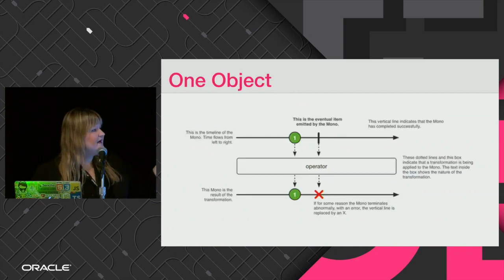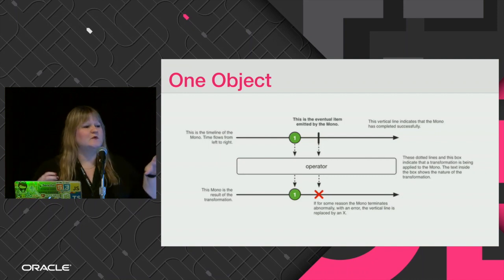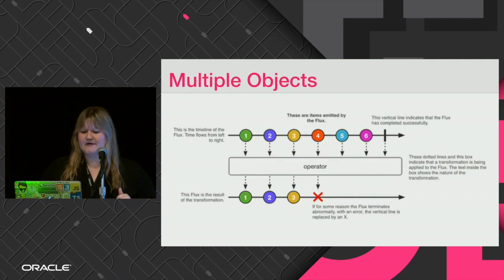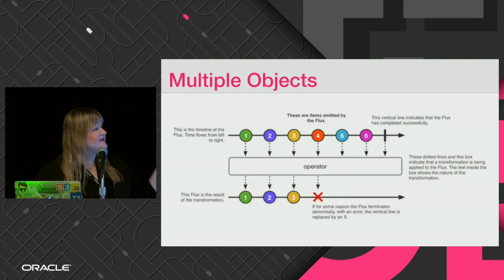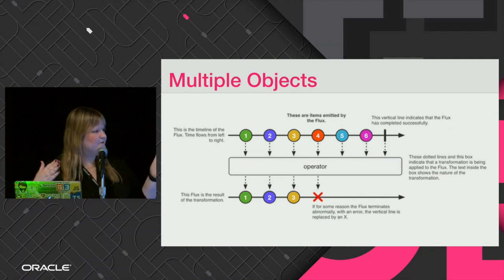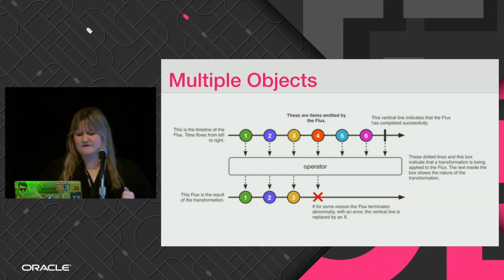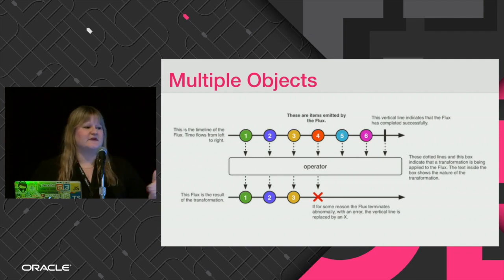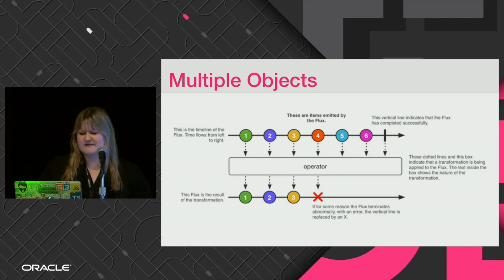For a single object, the publisher will only stream one object and then complete. For multiple objects, the source will stream multiple objects continuously. And of course, for any reason you can also terminate that stream at any time.